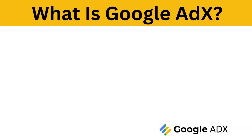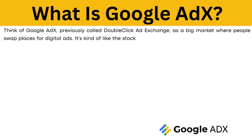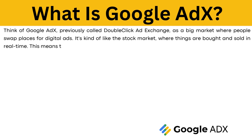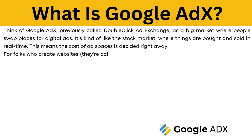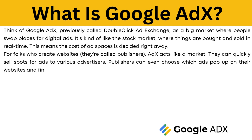What is Google AdX? Think of Google AdX, previously called DoubleClick Ad Exchange, as a big market where people swap places for digital ads. It's kind of like the stock market where things are bought and sold in real time. This means the cut of ad spaces is decided right away. For folks who create websites, called publishers, AdX acts like a market where they can quickly sell spots for ads to various advertisers. Publishers can even choose which ads pop up on their websites and find out who bought the spots and how much they paid.